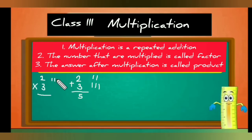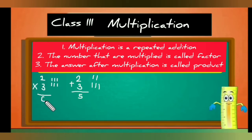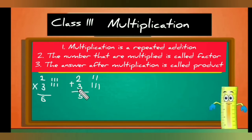But when we do multiplication, two multiplied by three means two groups of three: one, two, three, four, five, six — two groups of three equals six. So the addition answer is five and the multiplication answer is six. I hope the difference between addition and multiplication is clear.